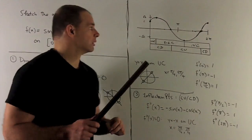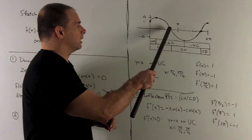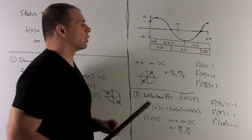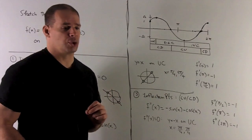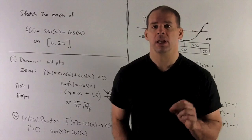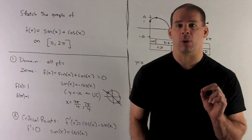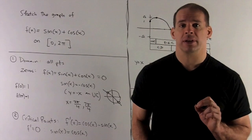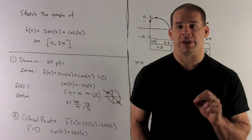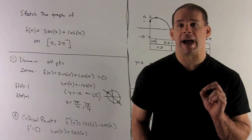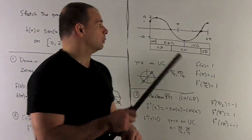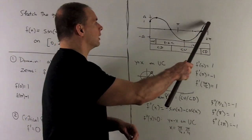Drawing the graph in, we have a point at 3π/4, which is just shy of π, and then 7π/4, which is just shy of 2π. For a few more points, we do the endpoints. Putting 0 into the function gives 1, and putting 2π in also gives 1. So those will be the points on the ends.